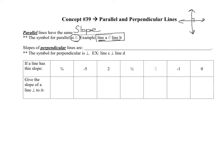Perpendicular lines have slopes that are opposite reciprocals of each other, so you're doing two things: you're changing the sign and you're flipping it. The symbol for perpendicular looks like this, and a math sentence example would be: line C is perpendicular to line D.